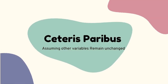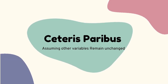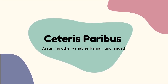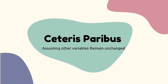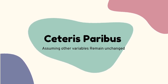Let's look at what Ceteris Paribus is. Assuming other variables remain unchanged is known as Ceteris Paribus. For example, if the price of Coke falls, Ceteris Paribus, its demand will increase. Pepsi may react and reduce their prices as well, which may mean demand remains unchanged. So when only one variable changes and others are held constant, it is known as Ceteris Paribus.